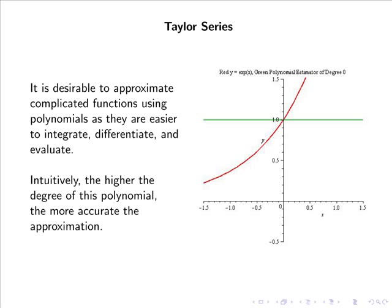Consider the figure on the right-hand side where we have the function y equals e to the x in red and a polynomial estimator of increasing degree about the point x equals 0 in green. Notice that as the degree of this polynomial increases, the accuracy about the point x equals 0 also increases.